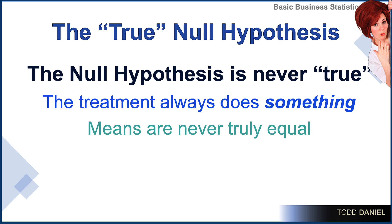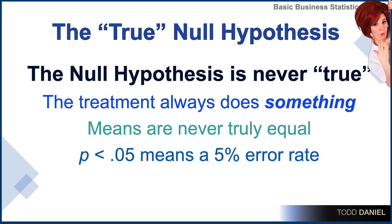And what p less than 0.05 is really telling us is that any time we make a decision based on that probability, 5% of the time it's going to be a mistake. We will make an error in 5 out of 100 conclusions about the data.